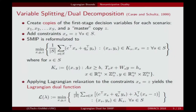We obtain this variable-splitting reformulation. The set K_s is the set of all constraints including the first-stage constraints and the constraints on the recourse variables in scenario s — one set for every different scenario. Using the split variables x_s and y_s, that part decomposes by scenario. What links it together are the constraints that all first-stage variable copies should be equal to each other.